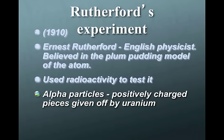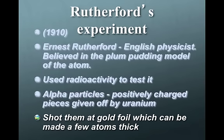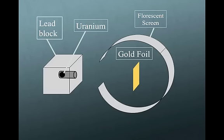What he did was he used alpha particles, which are positively charged pieces given off by uranium, and shot them at a thin gold foil. What he expected to happen was to have these positively charged molecules go straight through this foil.